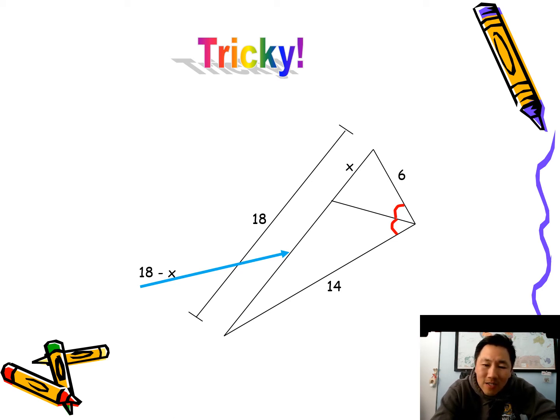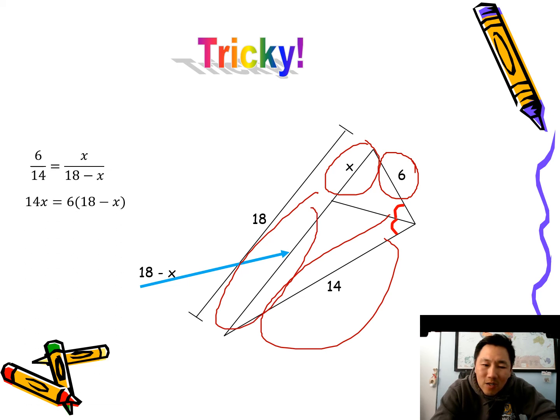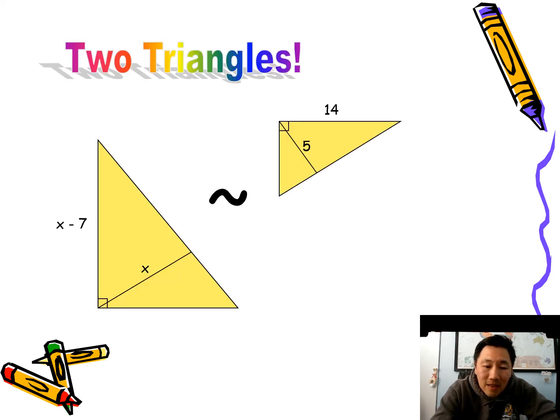So once you get that, you can set up the proportion. I did 6 over 14, and then X over 18 minus X. Cross multiply, solve it out. Oh, I got a fraction: 27 over 5. Make sure you reduce your fractions. If you didn't get 27 over 5, reduce it and maybe you'll get the right answer.